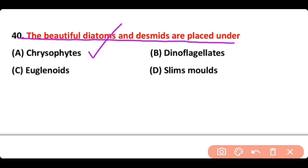Chrysophytes is actually a group of algae commonly known as golden brown algae.